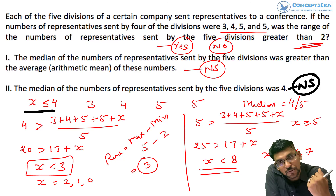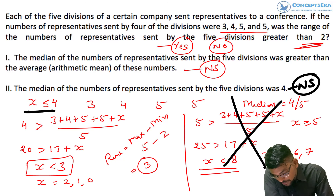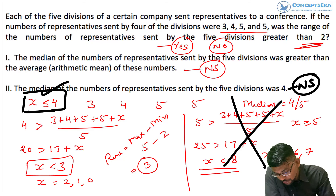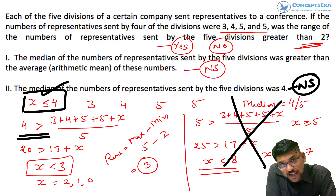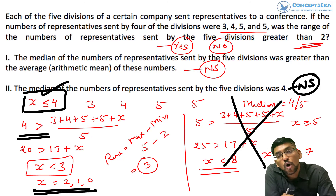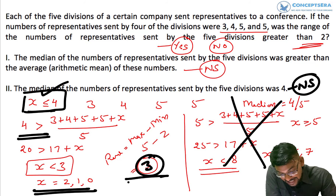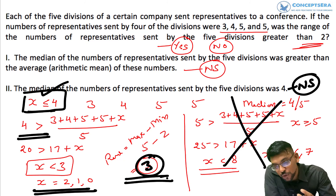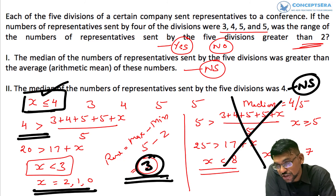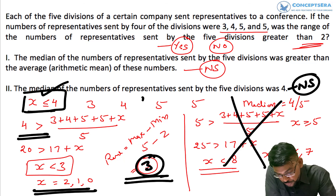But if we combine both statements, the median = 5 case is immediately ruled out. We're left with only the case where x ≤ 4 and 4 > mean, which means x must be 2, 1, or 0. When x is 2, 1, or 0, the range is definitely greater than or equal to 3, so range > 2. After combining both statements we can answer the question, but not individually. The correct answer is C.